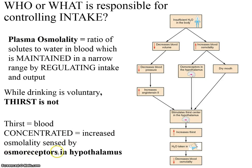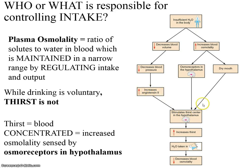This is sensed by osmoreceptors — there's always a sensor. Sensed by osmoreceptors in the hypothalamus. Insufficient water in the body leads to decreased blood volume and increased blood osmolality — they go hand in hand. This increased blood osmolality — the blood being more concentrated, specifically plasma — causes osmoreceptors to respond. A dry mouth also contributes. Both of these stimulate the hypothalamus, which creates thirst, and you drink. When you drink, you decrease plasma osmolality. We also have to remember that decreased blood volume decreases blood pressure and increases angiotensin II, which also stimulates thirst. All of these come together in the stimulation of the hypothalamus.